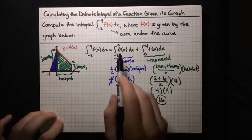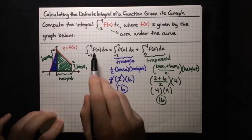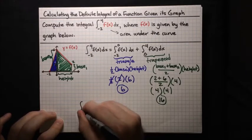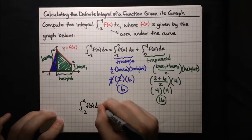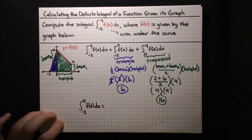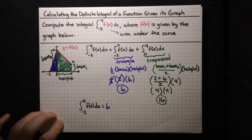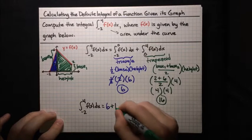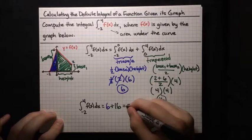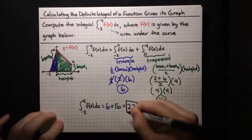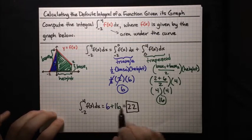Now we know what these two integrals are, and when we add them we get the integral we actually want to find. The integral from negative 2 to 4 of f(x) dx equals 6 plus 16, which is 22. That's the area under the graph of f(x) from negative 2 to 4.